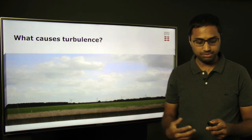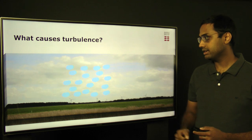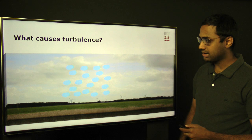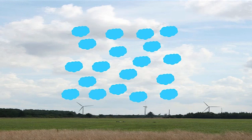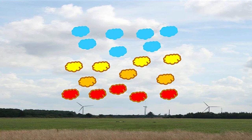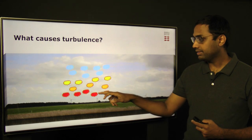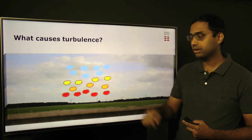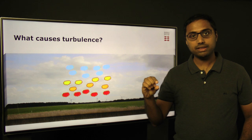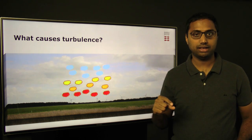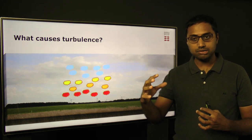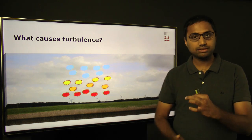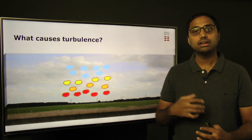Another reason why turbulence occurs relates to temperature. Air parcels denoted by small blue clouds have more or less the same temperature. During the day, when the sun shines, the ground heats up, causing air parcels closer to the ground to be heated more than those higher up. The difference in temperature — warmer shown in red, colder in blue — means colder air parcels have larger density and hence greater mass. The heavier air parcels mix with the lighter ones near the ground, causing turbulence.